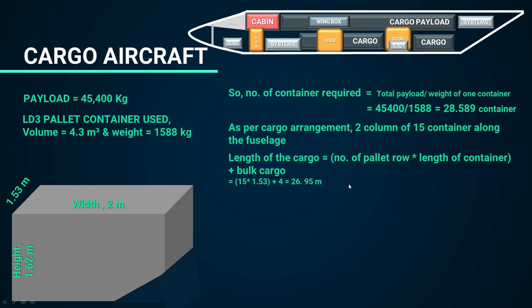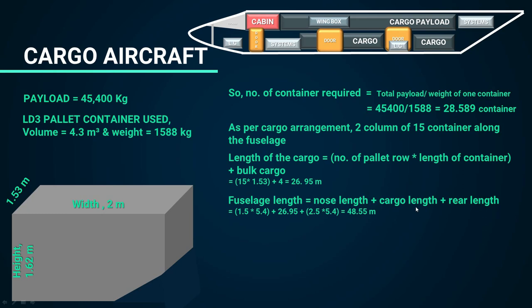The total length of the fuselage equals nose length plus cargo length plus rear length. In a similar fashion to the passenger aircraft, we take the nose length ratio as 1.5 and the rear length ratio as 2.5. Applying these ratios, the total fuselage length comes to about 48.55 meters. The fineness ratio is 48.55 divided by 5.4, which equals approximately 9.0. You have to check this with your comparative data study or the optimized value from your analysis.